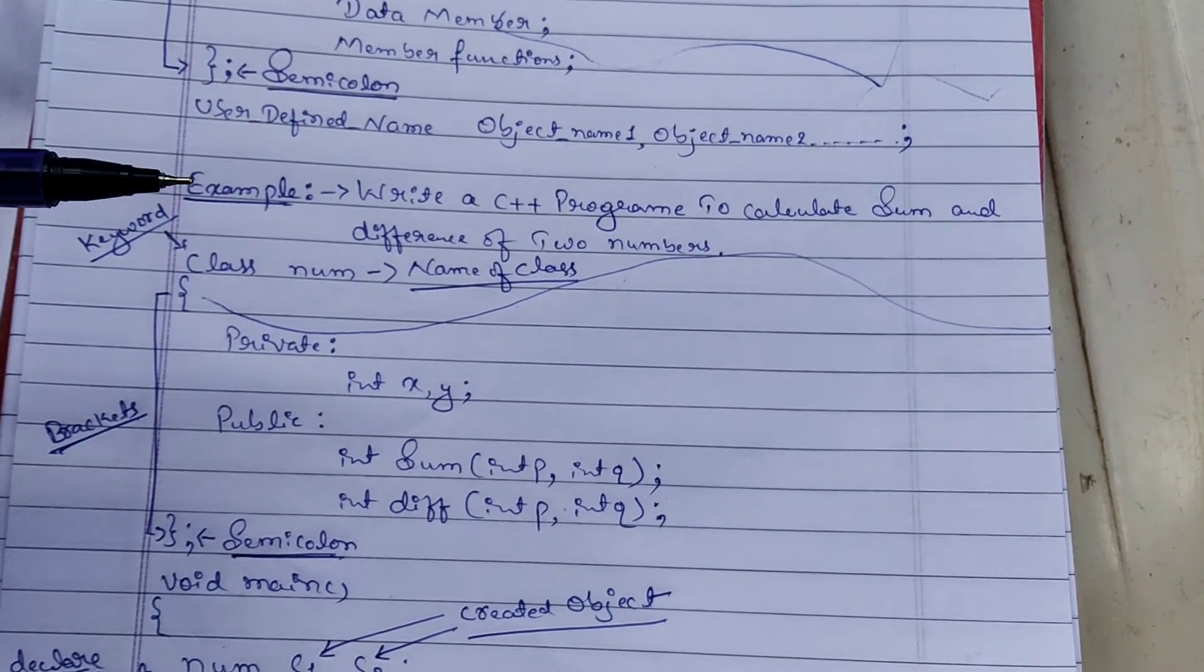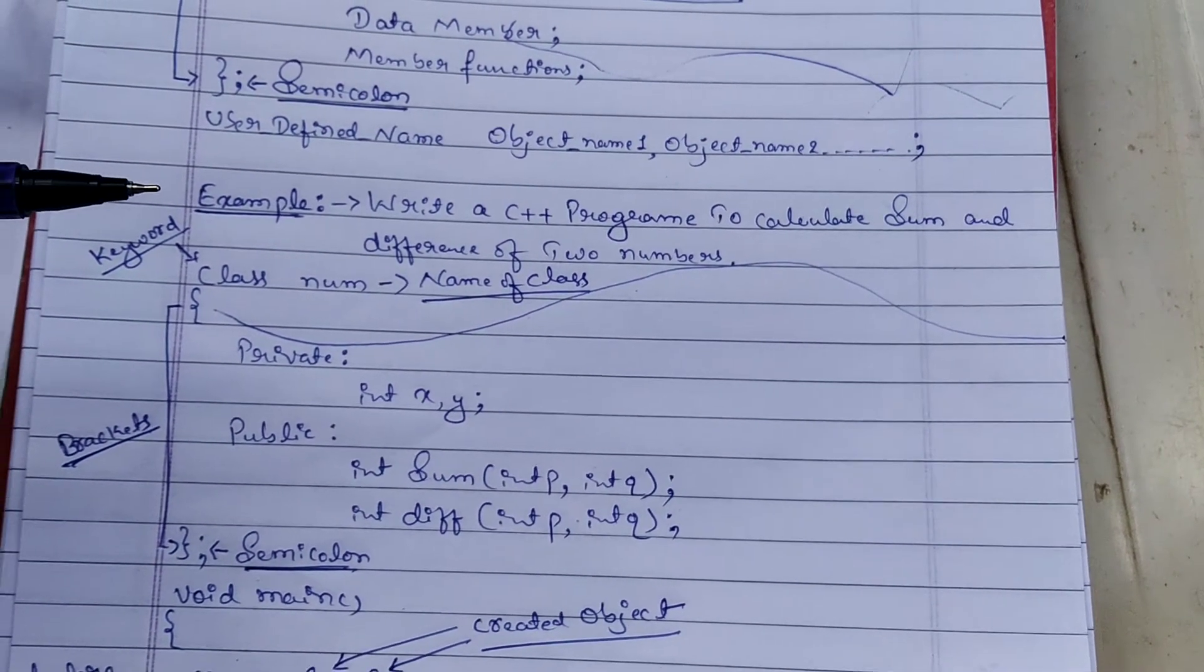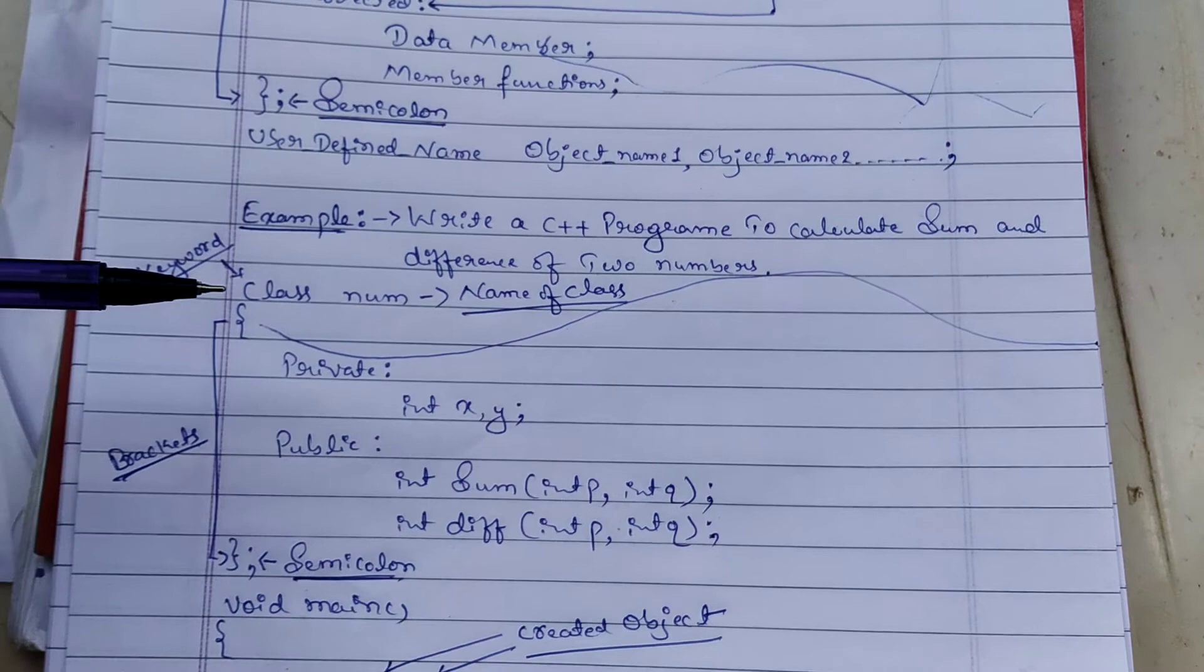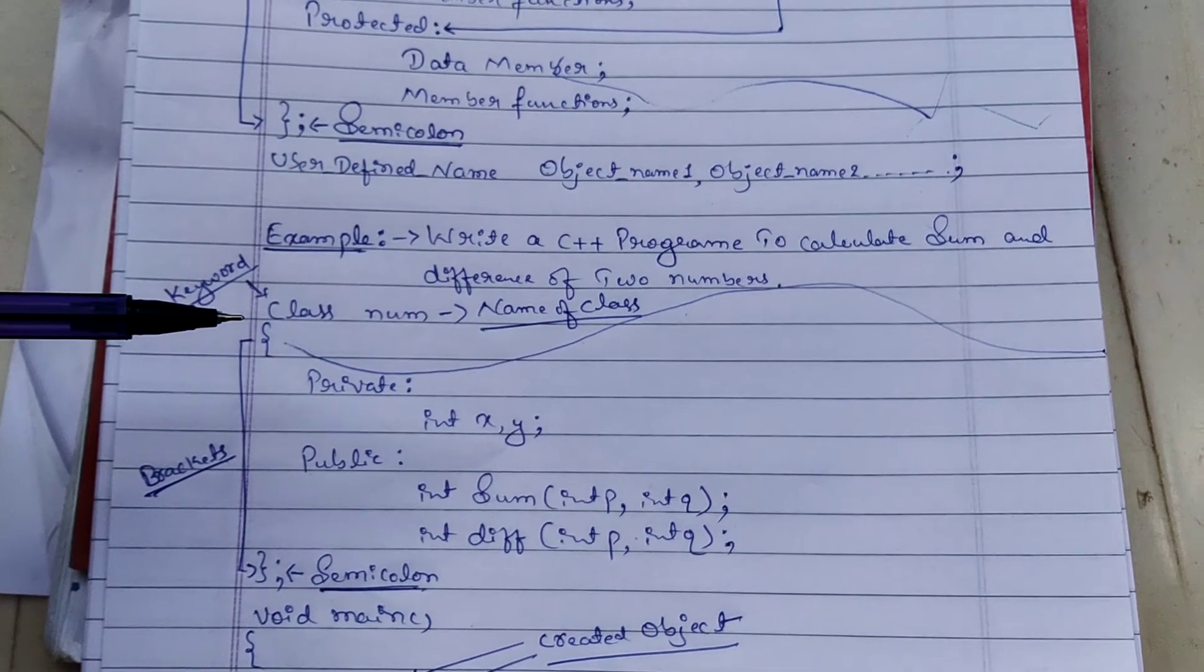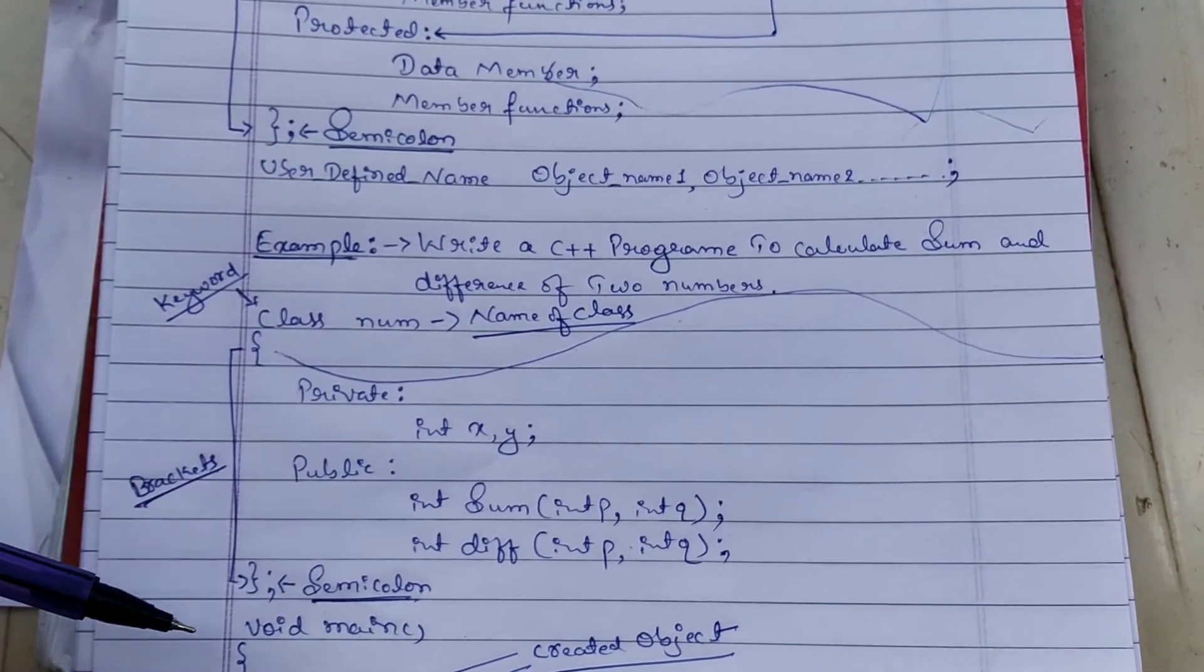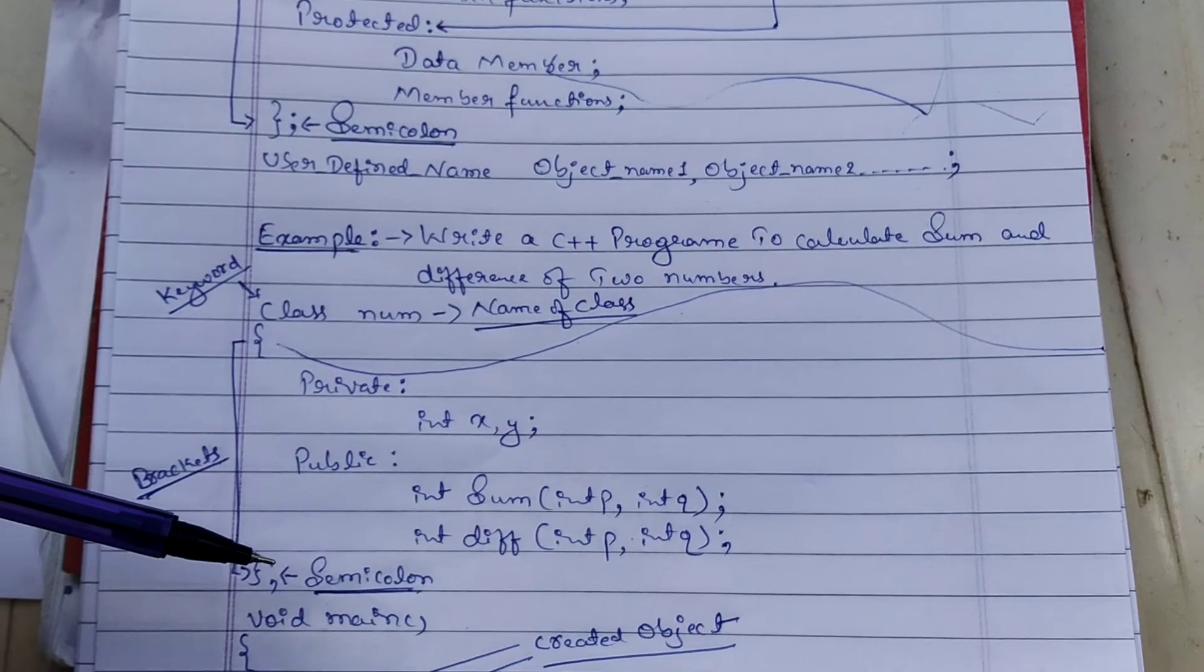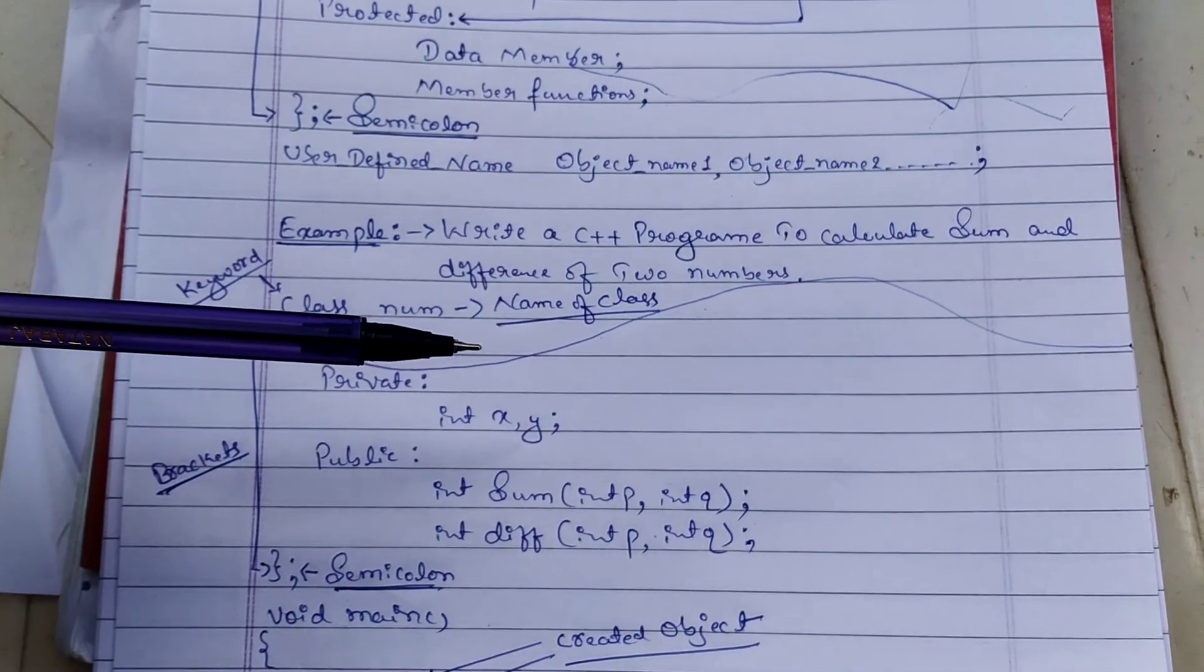Using the same syntax, I have written the keyword 'class' with opening and closing brackets and semicolon. I have taken 'num' as the name of the class. For private data members, I have taken integer data types.